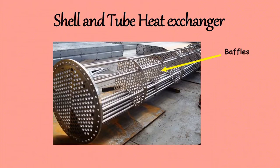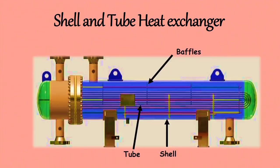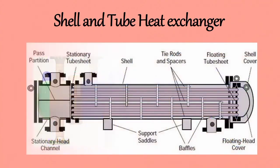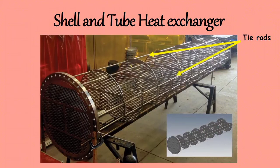The last component is Tie rods. Tie rods are used to hold the baffles in place with spaces to position or locate the baffles. Tie rods are fixed at one end in the tube sheet by making blind holes. Usually 4 to 6 tie rods with at least 10 mm diameter are necessary.